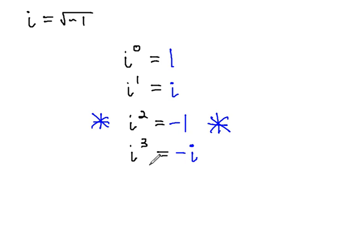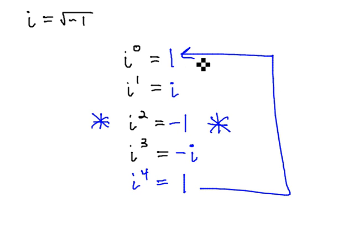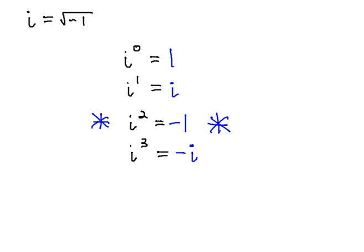And this cycle will repeat through. i to the fourth then will be the opposite of i squared. Well, i squared is negative 1, and the opposite of negative 1 is 1, and you notice we're back to the beginning of the series. So really, there's only these four that we need to know.